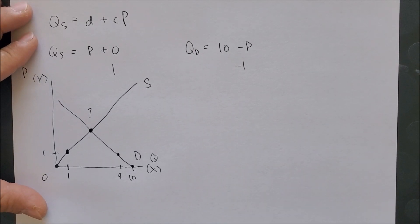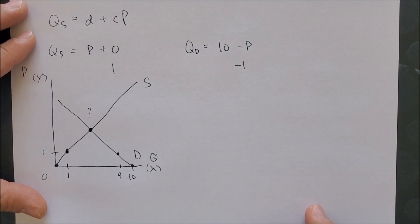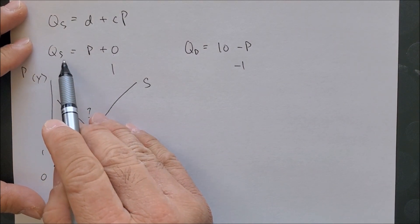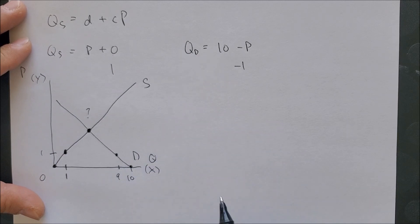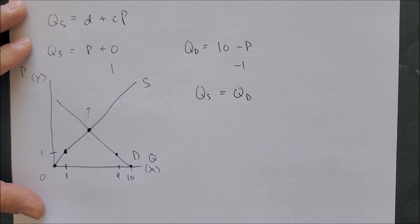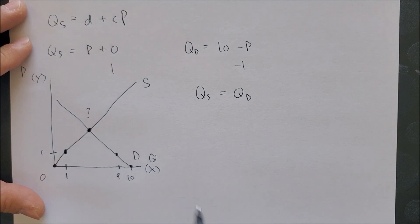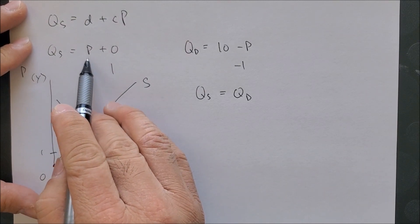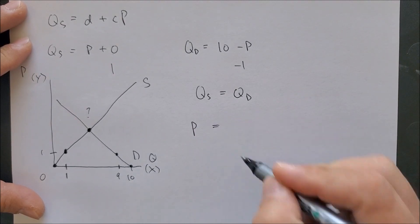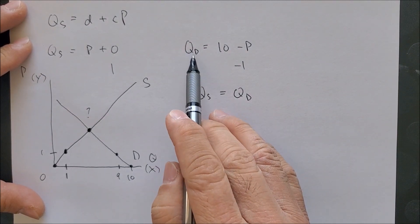Instead, an easier way is setting both quantity supply equal to quantity demand: Q_s equals Q_d. Since we have Q_s on the left-hand side, which is P, this equals Q sub d of 10 minus P. Now we can solve for P.